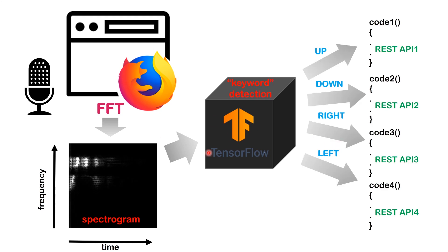What this black box does is take the spectrogram as input and then execute different code depending on the recognized word. If it recognizes 'up,' it executes code one; if it recognizes 'down,' code two, and so on. This is JavaScript code, so you can access the REST API of your ESP8266 at different parts of the code. In this case, we access the 'on' endpoint, and in this case, the 'off' endpoint. We're not doing anything for the other two directions.